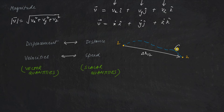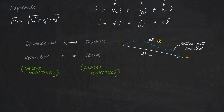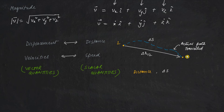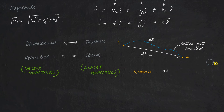Distance delta s contains information about the path that has been traveled but does not contain information about direction. For example, if a particle travels in a complete circle and returns to its initial point, the displacement will be zero — since start and end points coincide — but the distance will be the circumference of the circle. So distance is the actual path traveled, while displacement is the vector drawn from the initial to the final point.